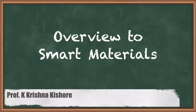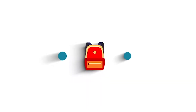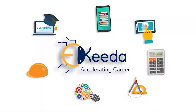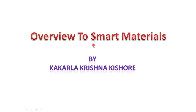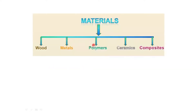Today we are going to discuss the overview of smart materials. So many materials are available — wood, metals, polymers, ceramics, and composites — so we will discuss what smart materials are, why we concentrate on them, and their applications for various products.